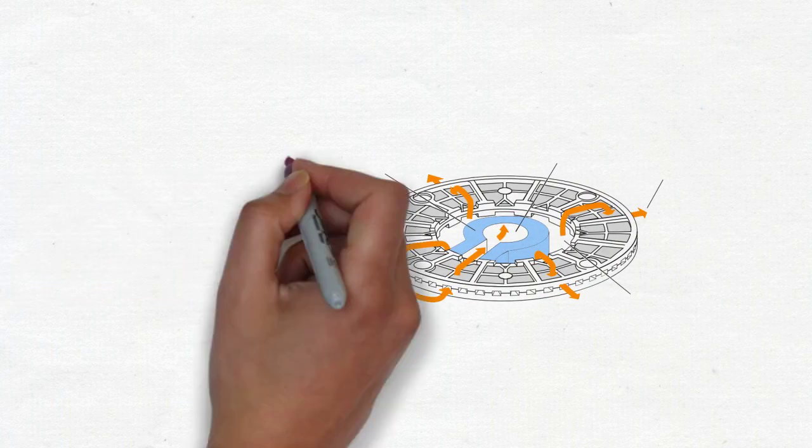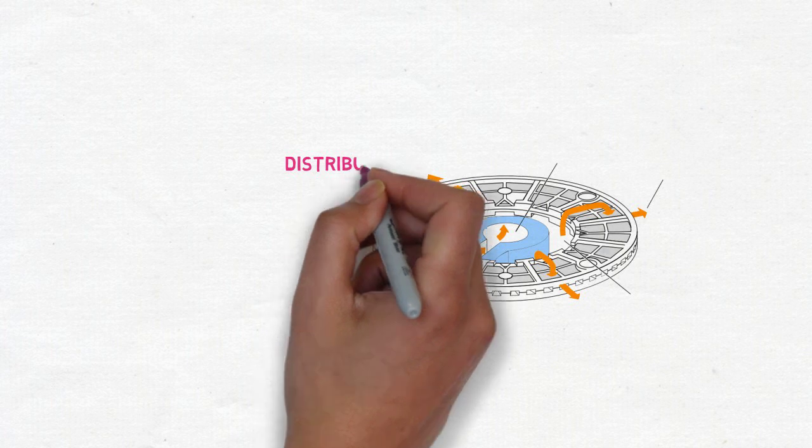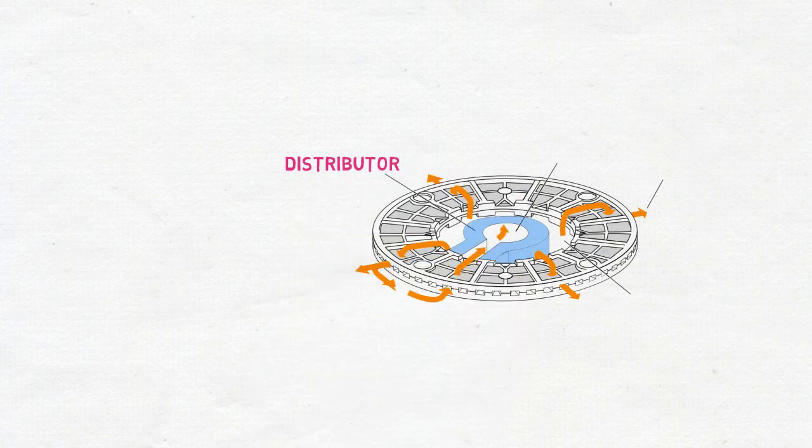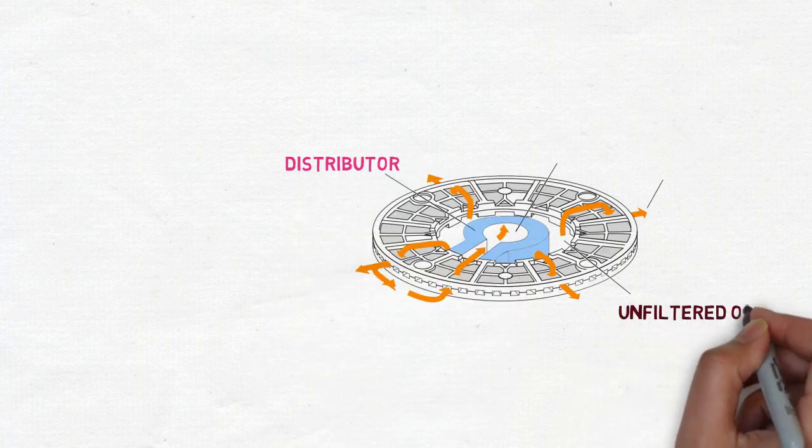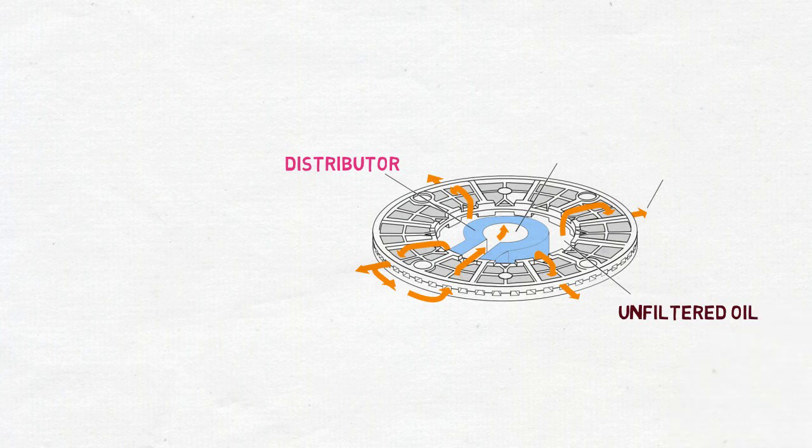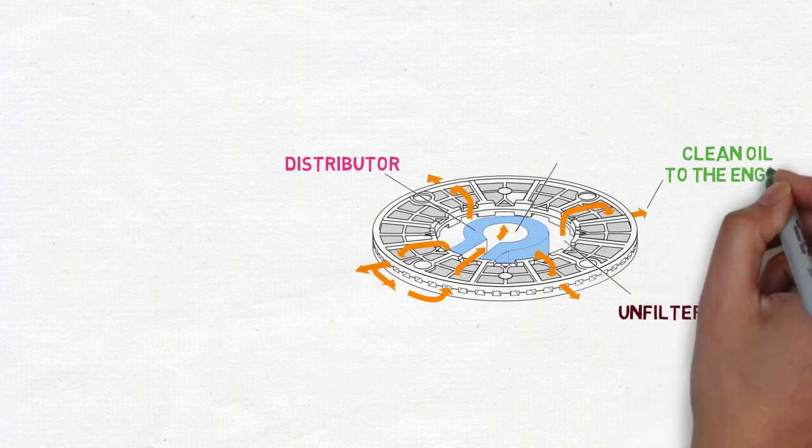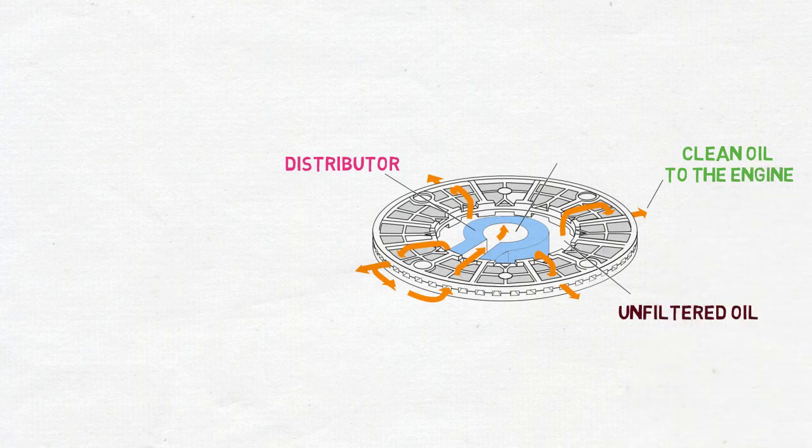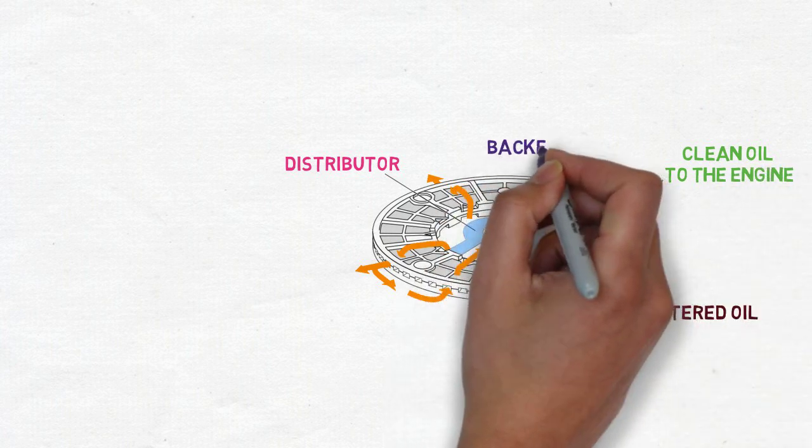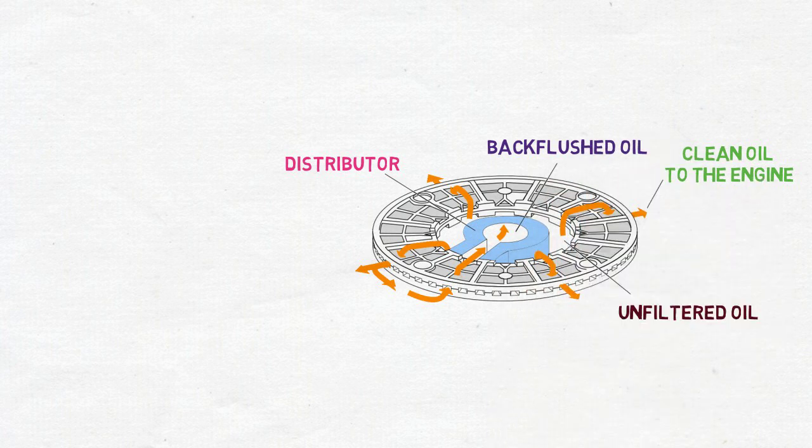Now let's go through the working of filtering elements. In the middle there is a distributor shown here, and from the passage filtered oil enters into the filtering element. This arrow shows the filtered oil going to the engine. From the middle of distributor, back flushed oil which cleans the filtering element comes out and goes into the diversion chamber.